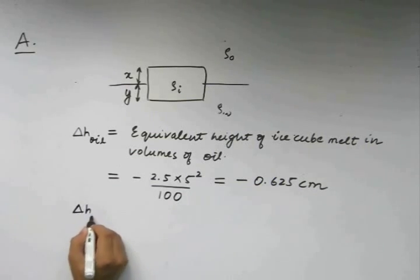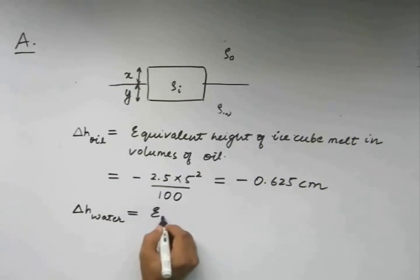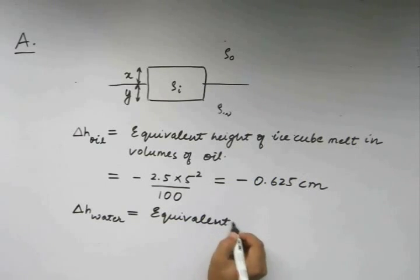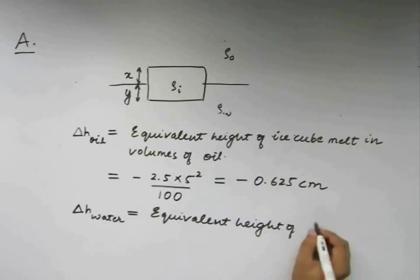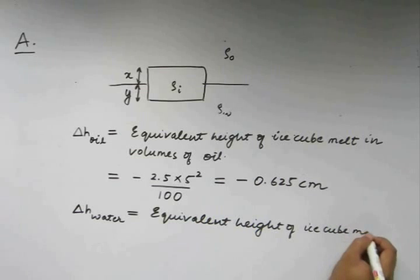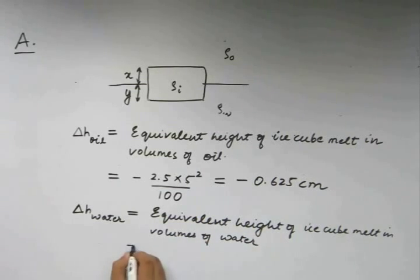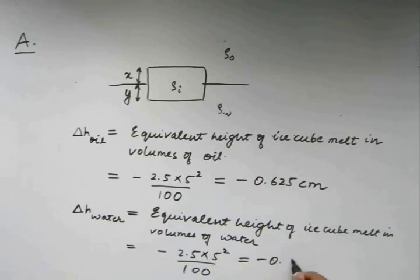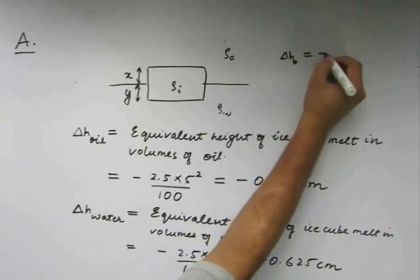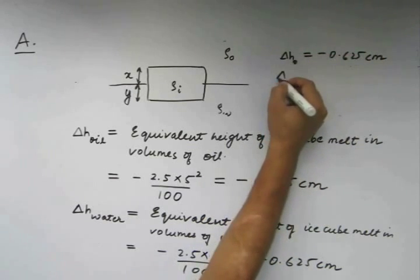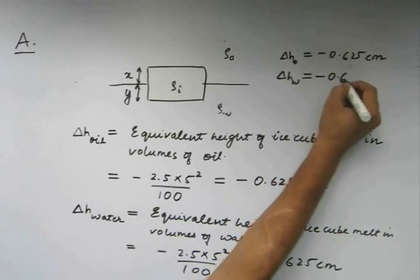Similarly for water, we have equivalent height of ice cube melt in volumes of water which is going to be equal to minus, again 2.5 because y was also 2.5, times 5 square by 100. This is again equal to minus 0.625 centimeters. So we have ΔH_oil is equal to minus 0.625 centimeters. ΔH_water is also equal to minus 0.625 centimeters.